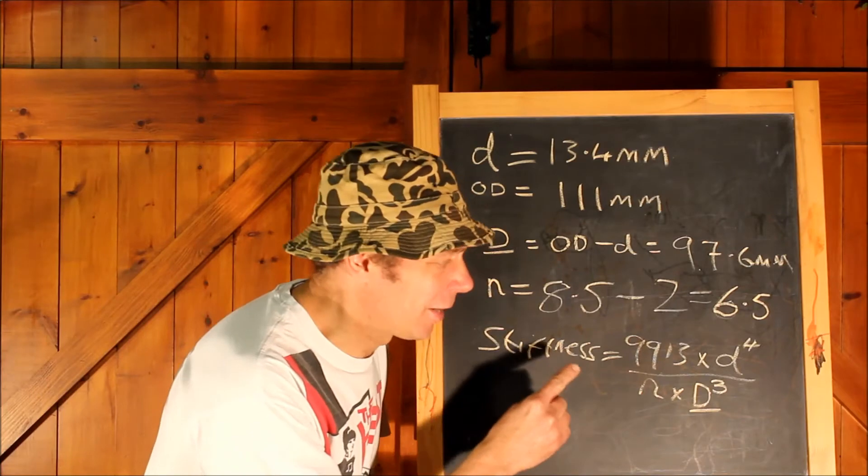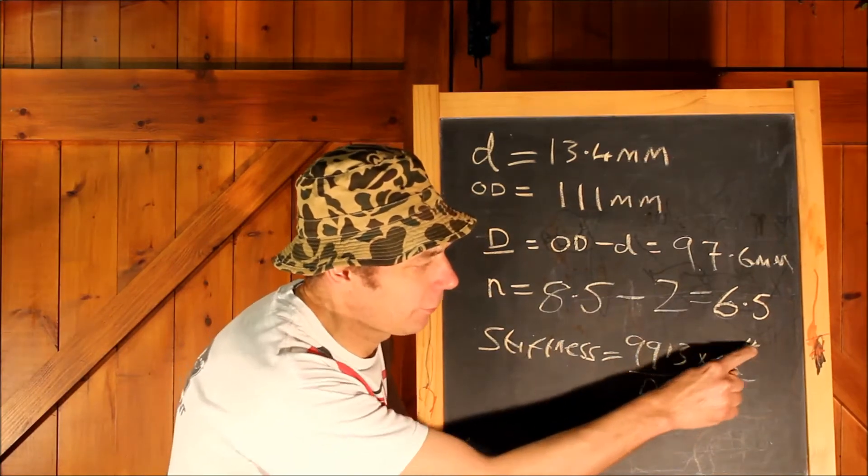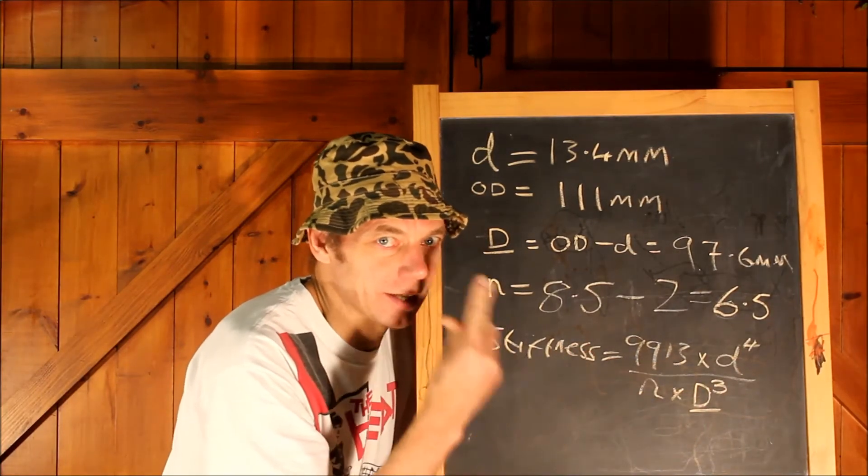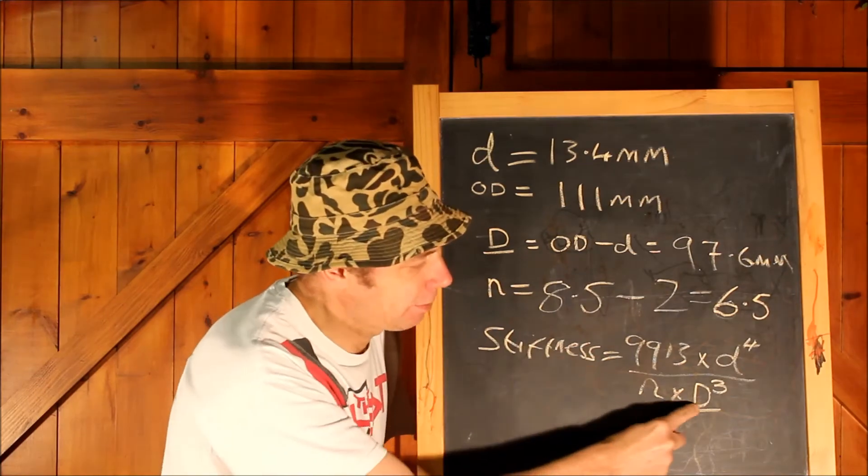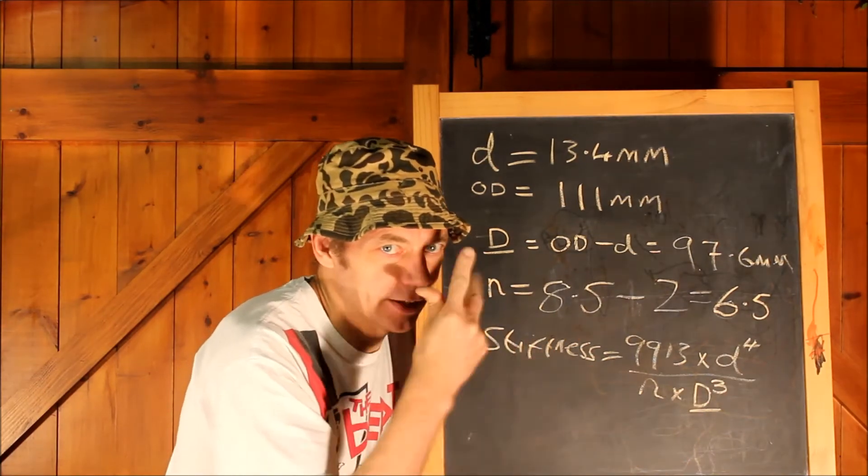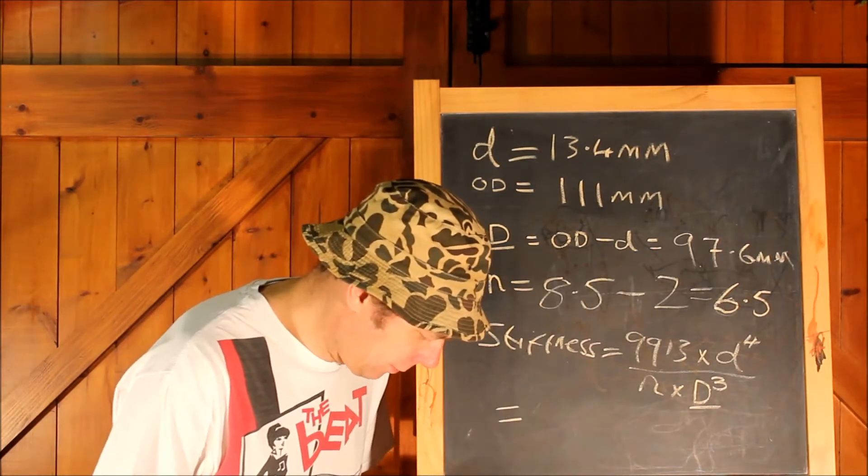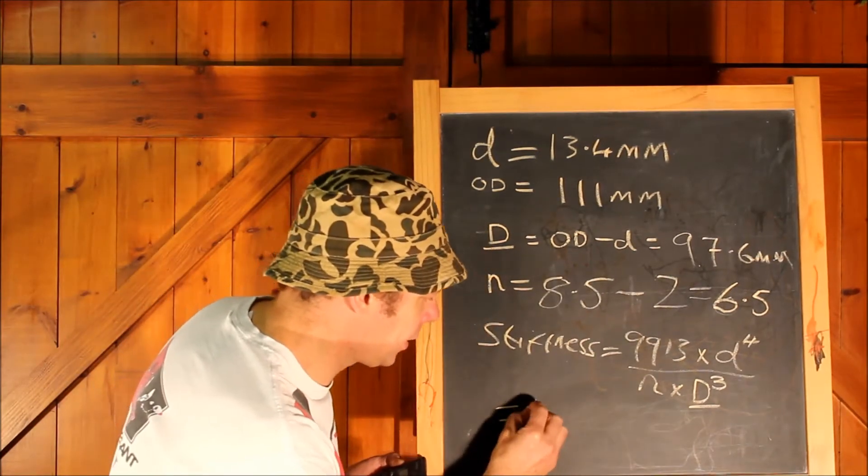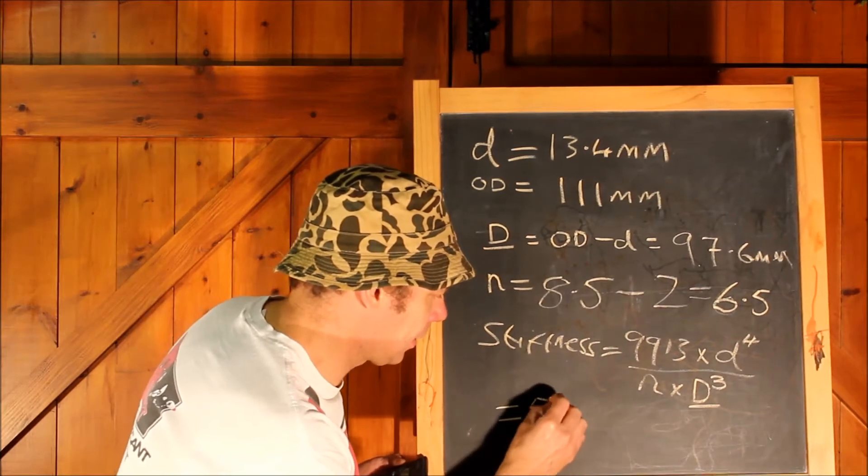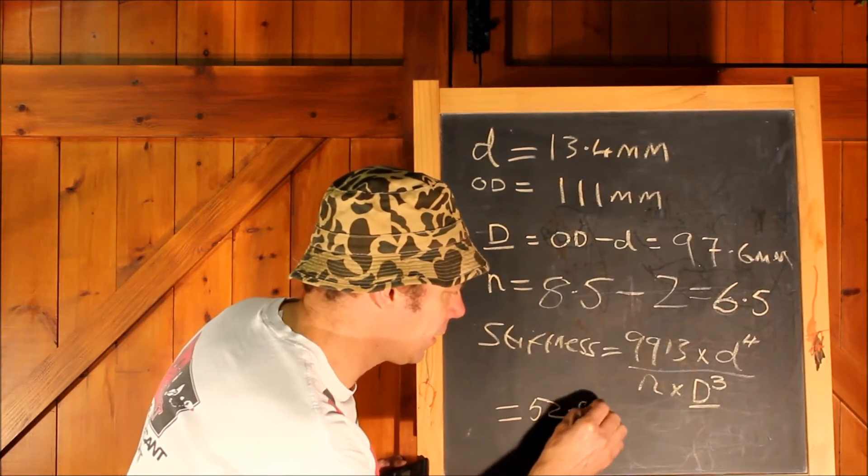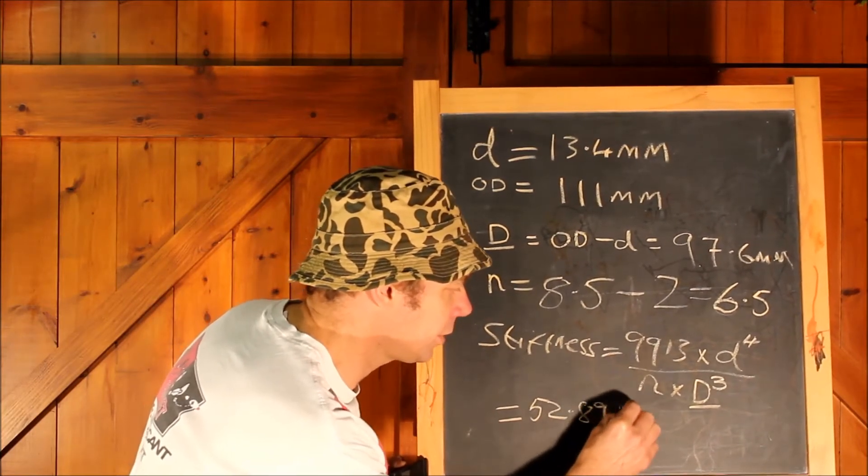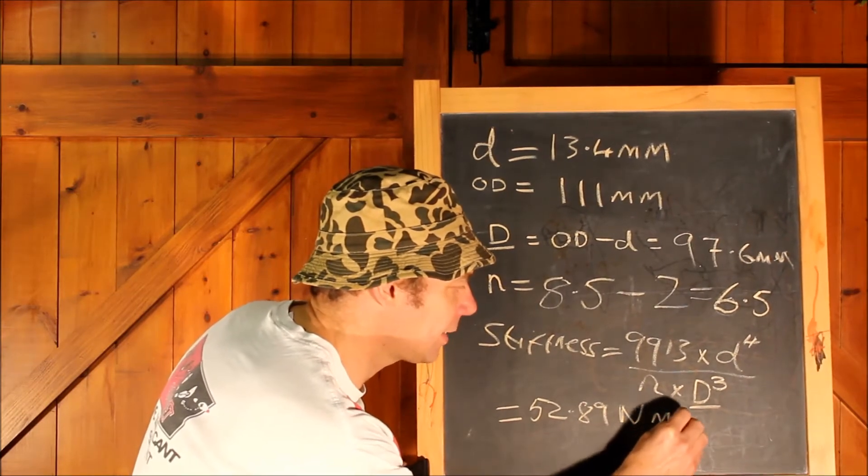So for those of you who didn't get your maths A-level, that means d to the 4 means that's little d times little d times little d times little d, and this big D cubed is big D times big D times big D, which works out the stiffness of 52.89 newtons per millimeter.